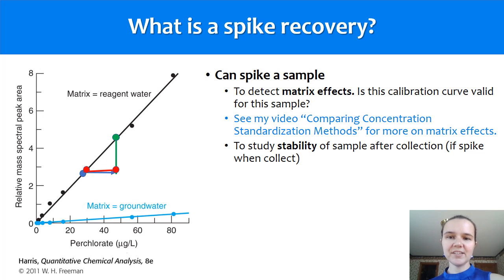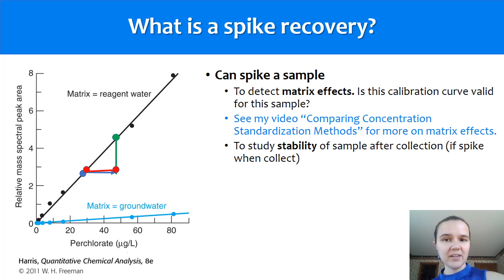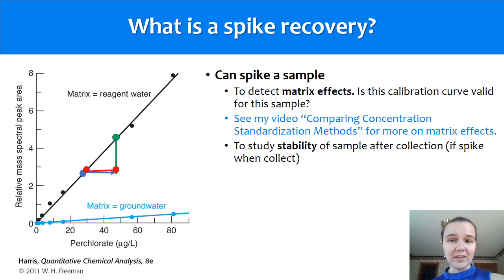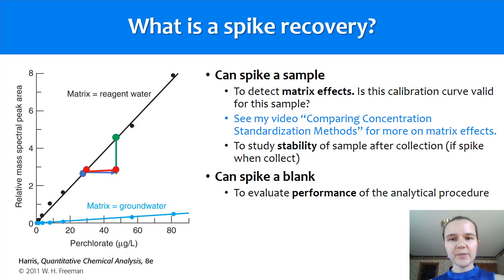The other reasons that you can do spike recoveries are to study how stable your sample might be. If you spike it when you collect a sample in the field, that spike should still be the same concentration later on when you get it back to the lab. You can also spike blank samples, and you usually do that to see if your analytical procedure is performing as it should.